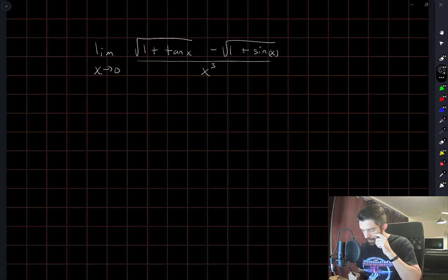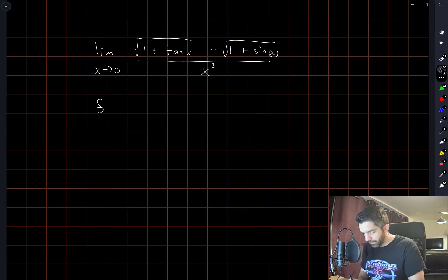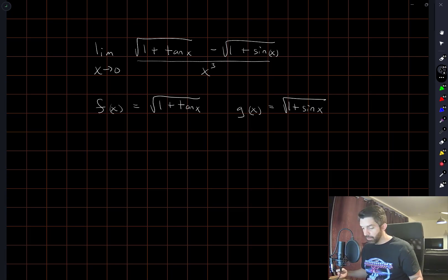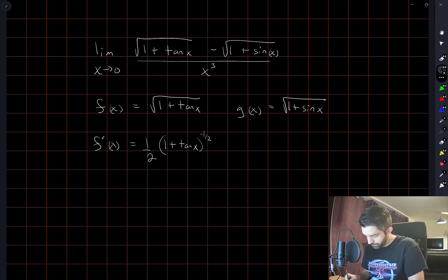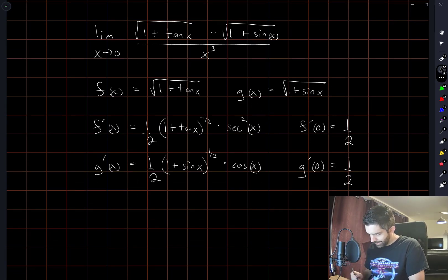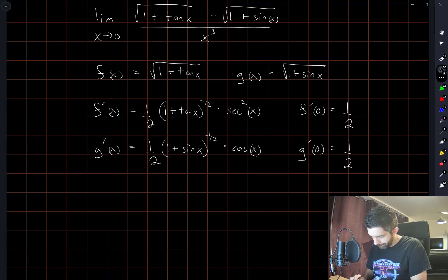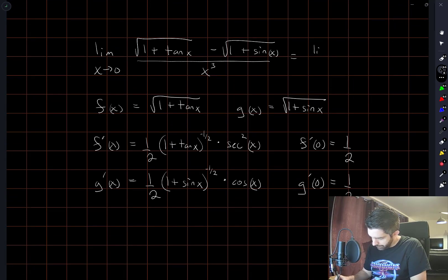I'm going to break it down into simple steps with individual derivatives. So f(x) = √(1 + tan x) and g(x) = √(1 + sin x). I'll compute derivatives of both, take their difference, and come back to substituting into L'Hôpital's rule. With L'Hôpital's rule we again get a 0 over 0 expression. So the limit as x approaches 0 of f(x) minus g(x) divided by x cubed equals the limit of f′(x) minus g′(x) divided by 3x squared.